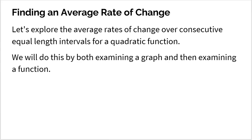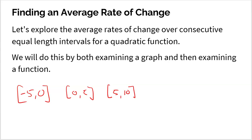The key thing here is consecutive equal length intervals in a quadratic function. They've got to be consecutive, going in order, and they have to be the same length. It doesn't matter what the length is — you pick it. So it could be 5: negative 5 to 0 as the first interval, then 0 to 5, then 5 to 10, then 10 to 15. That's consecutive — no gaps in between — and all equal length.